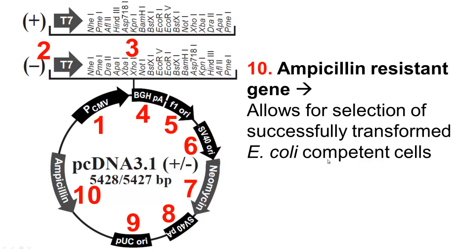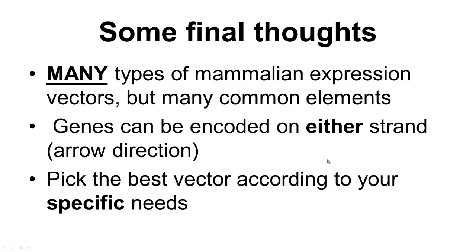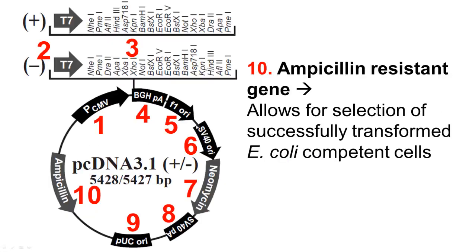And that's pretty much it. Some final thoughts: there are many types of mammalian expression vectors and I cannot cover all of them, but they all share many common elements explained here. There are genes that can be encoded on either strand of the plasmid, indicated by the arrow direction — for example, most elements have arrows going one way, but the ampicillin gene has the arrow going the other way. Remember, this is double-stranded DNA, so a gene can be encoded on either strand.